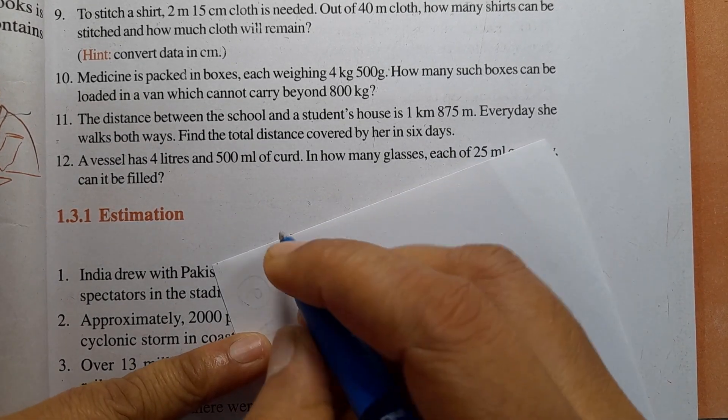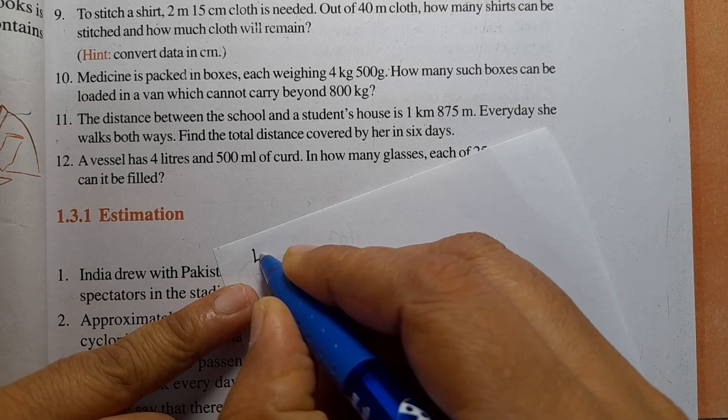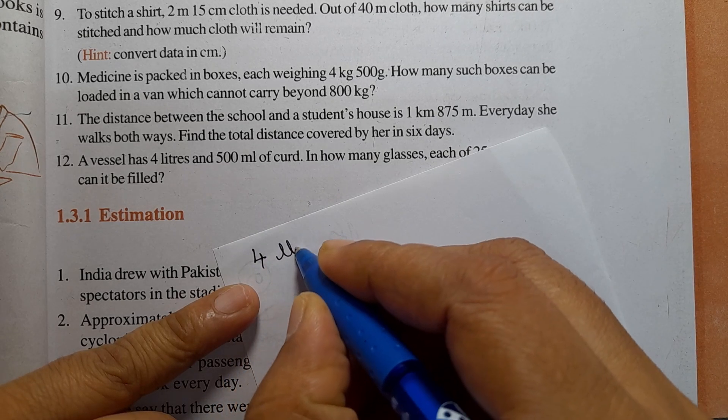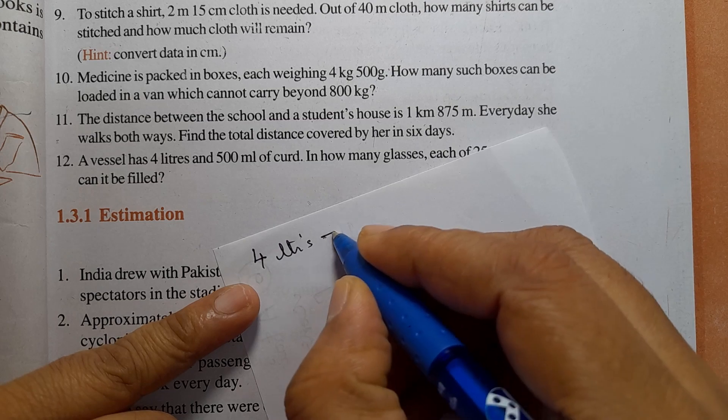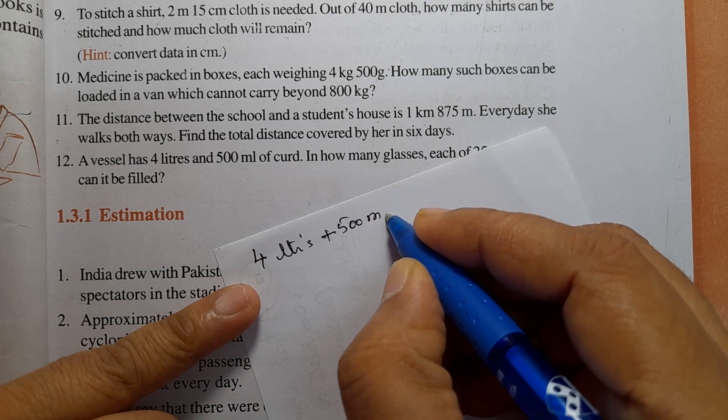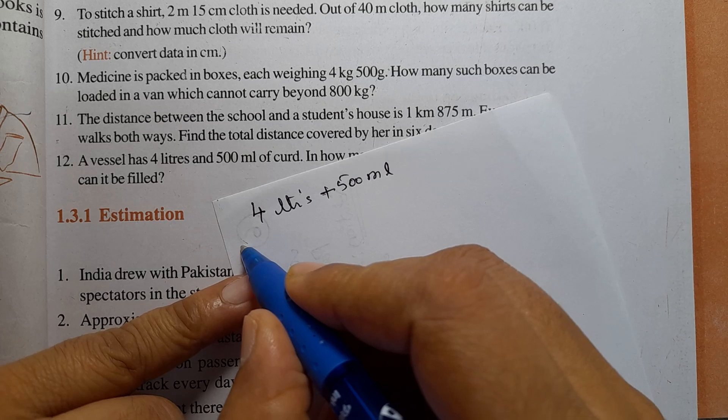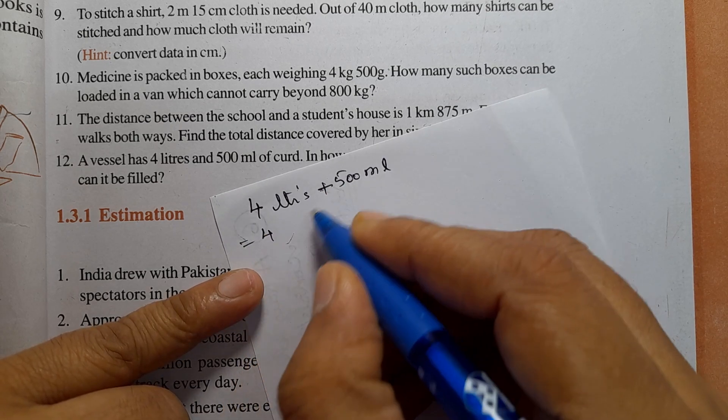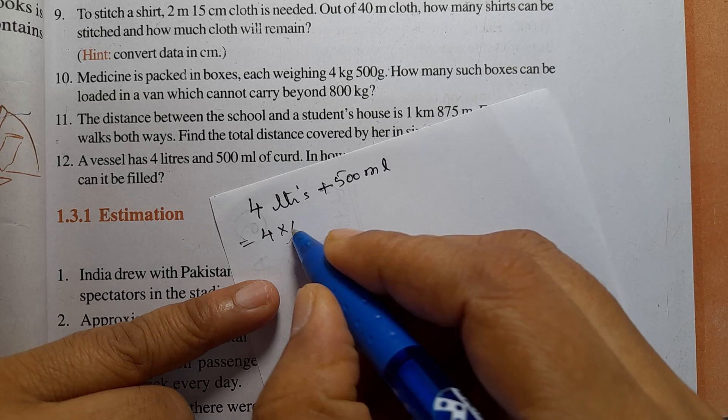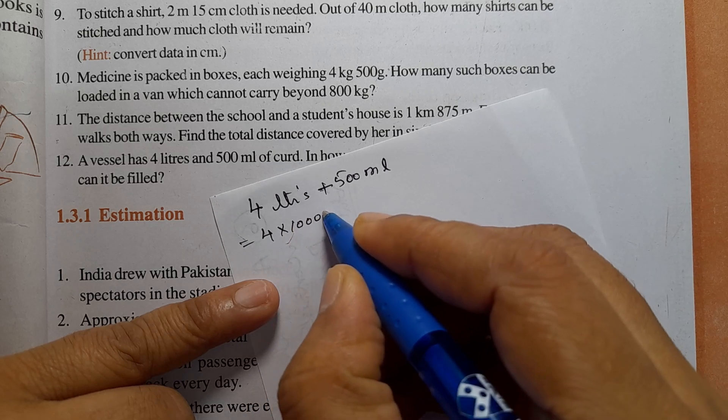A vessel has 4 liters and 500 ml. Now, 1 liter equals 1000 ml.